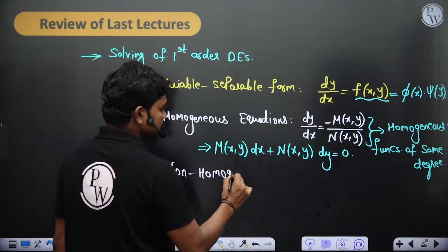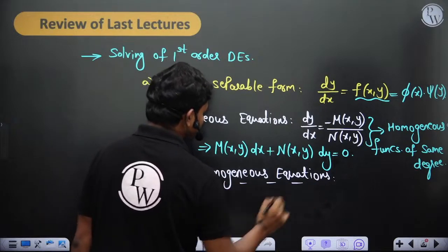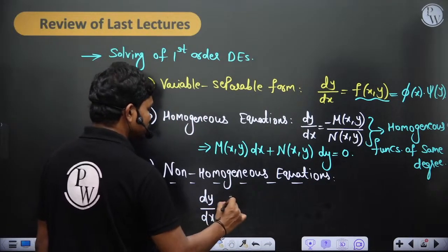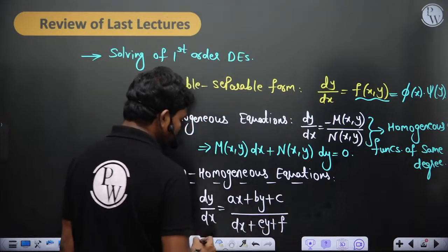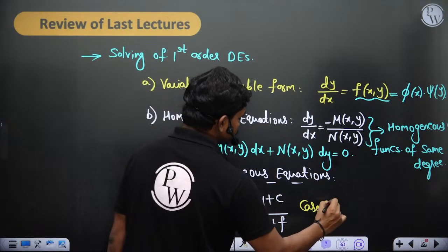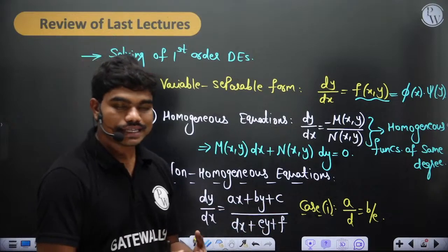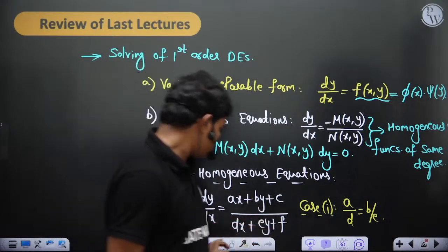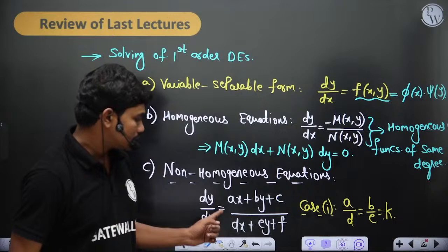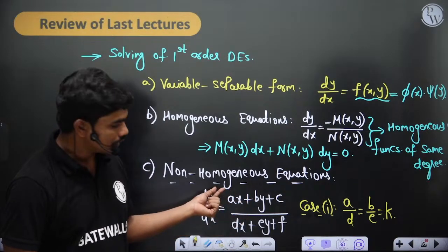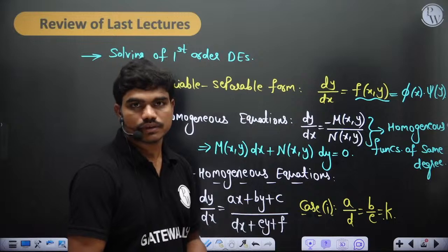We also saw non-homogeneous equations — specifically equations of the form dy/dx = (ax + by + c)/(dx + ey + f). We looked at case one where a/d equals b/e. In that case, writing a/b = b/e = k, we set dx + ey = t, and this substitution converts the equation to a variable separable form which can then be solved.